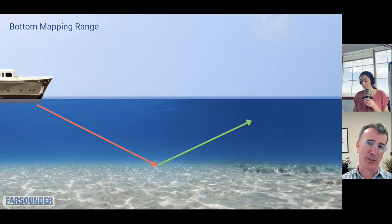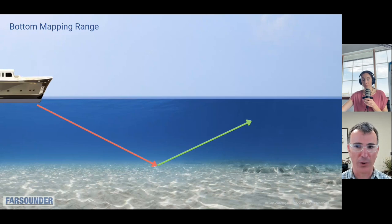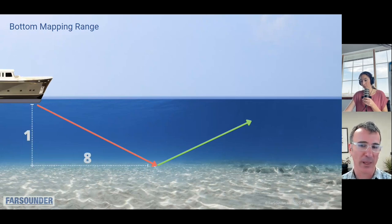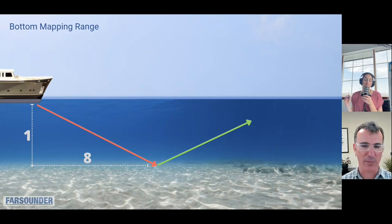The seafloor does that same type of thing with sonar energy. So with your echo sounder pointing down, it's going to reflect back to you. With a forward-looking sonar at some point it's going to reflect back to you, but also eventually reflect forward. And it turns out that this point is about eight times the depth below the sonar. And beyond that you're still putting out energy, but it's reflecting forward.